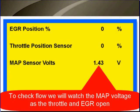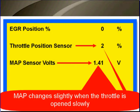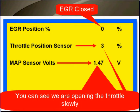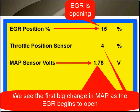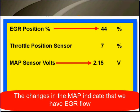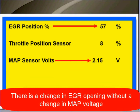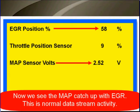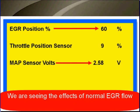To check the flow, we're going to watch the MAP voltage as the throttle and the EGR open. MAP changes slightly when the throttle is open — we barely open the throttle and MAP moves slightly. The EGR is still closed. You can see we're opening the throttle very, very slowly. EGR is opening. We see the first big change in MAP as the EGR begins to open. EGR continues to open and we continue to see MAP changing. The changes in MAP indicate that we have EGR flow. There is a change in EGR opening without a change in MAP, but don't get excited — now we see the MAP catch up with the EGR. This is normal data stream activity.